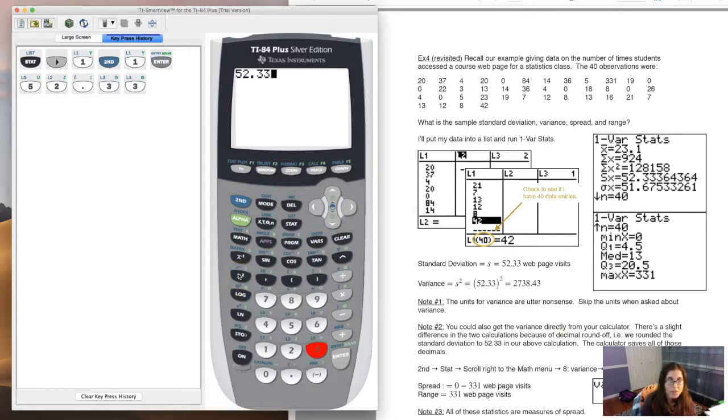But I think probably the quickest way to crunch this number is just to take your standard deviation and square it. Now here's your squared key, it's to the left of your comma key, or you could say it's over your log button. I'm just going to ask my calculator to crunch that number, and there is my variance. So you see me writing 2738.43. I rounded.